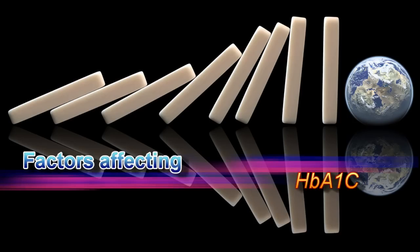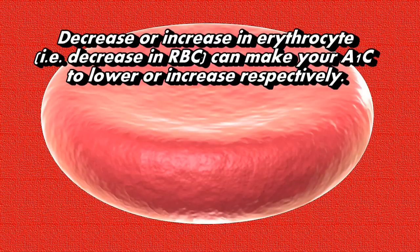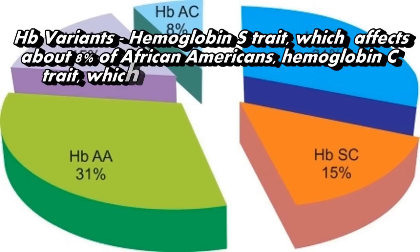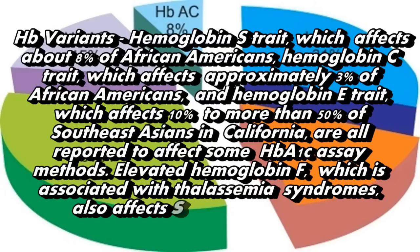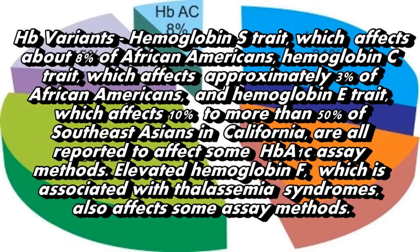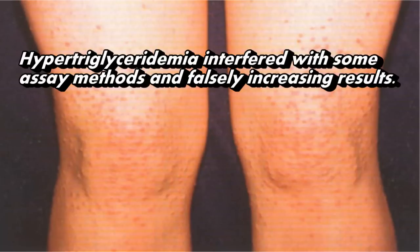A1c can be influenced — increased or decreased — by certain factors. Decrease or increase in erythrocytes (red blood cells) can make your A1c lower or higher, respectively. HbA variants such as hemoglobin S trait (affecting about 8% of African Americans), hemoglobin C trait (approximately 3% of African Americans), and hemoglobin E trait (10% to more than 50% of Southeast Asians in California) are all reported to affect some HbA1c assay methods. Elevated hemoglobin F, associated with thalassemia syndromes, also affects some assay methods. Hypertriglyceridemia interferes with some assay methods and falsely increases results.